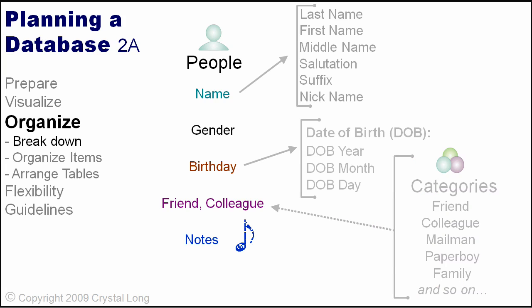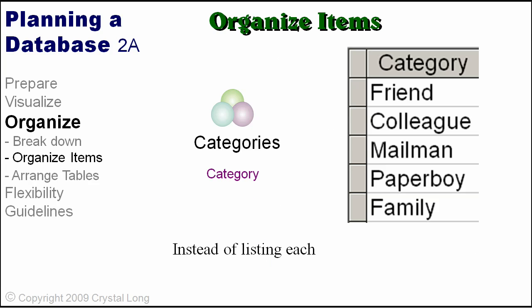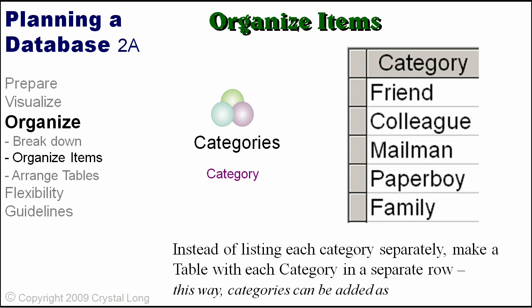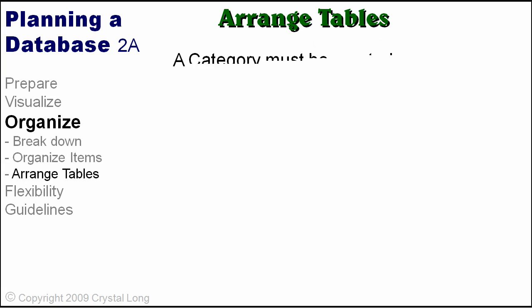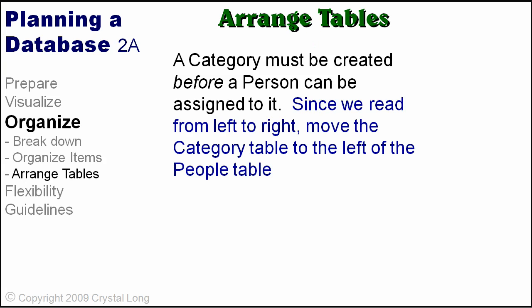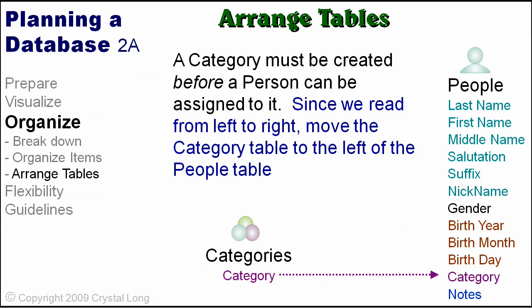We could have several notes, and some of these may result in things that need to be done. Make a table with each category in a separate row as a separate record. This way, categories can be added as needed, and we don't have to think of everything now. Before people can be categorized, the category must first exist. Since we read from left to right, move the category table to the left of the people table.